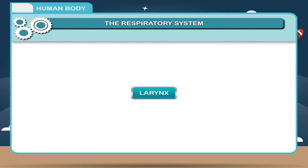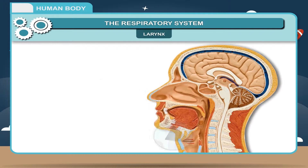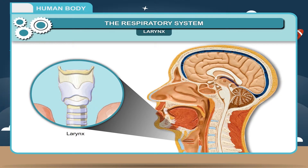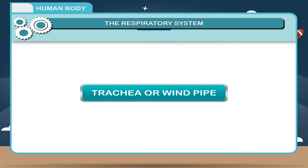Larynx. It is a rectangular box-like structure, also called the voice box. It plays a role in producing sound. It also prevents food and fluid from entering the air passage. It leads into a tube called the trachea.